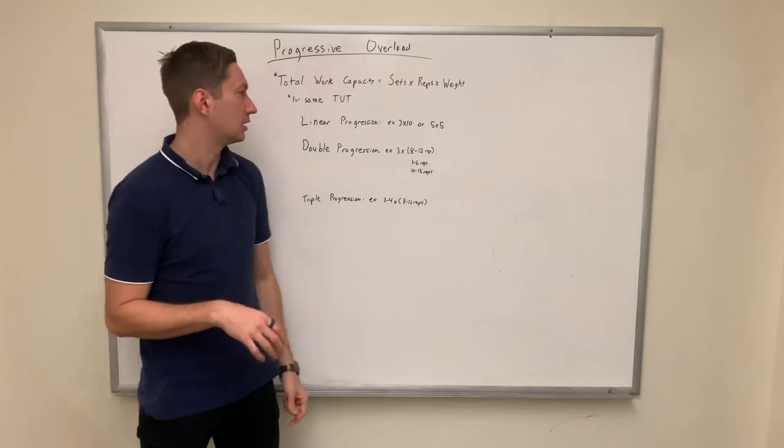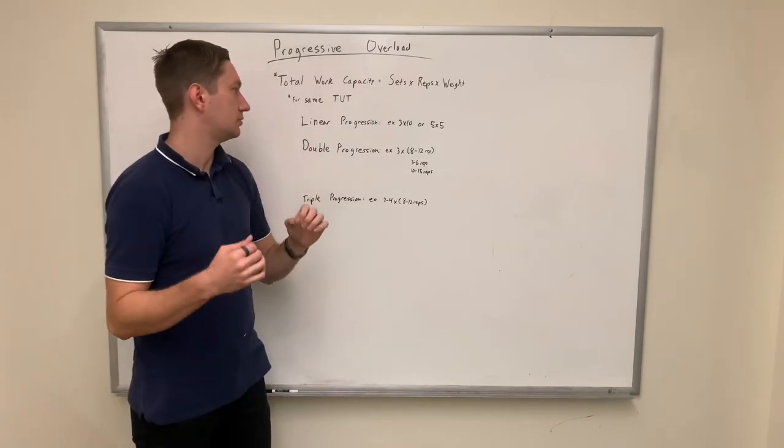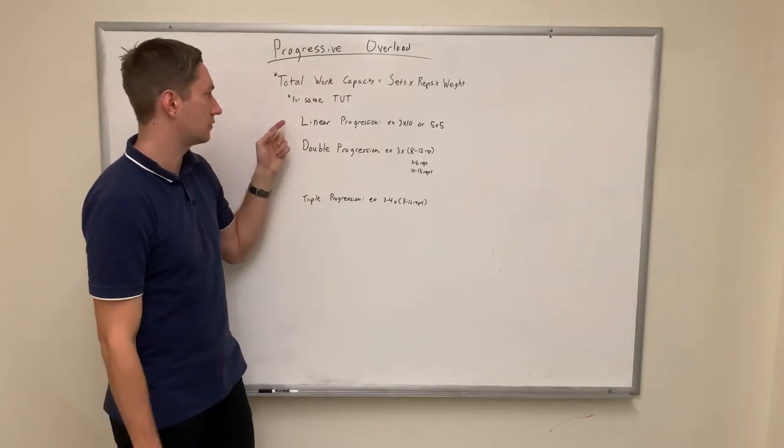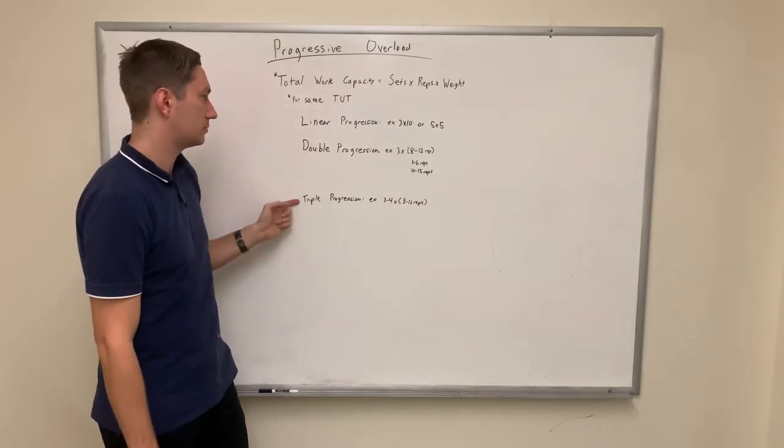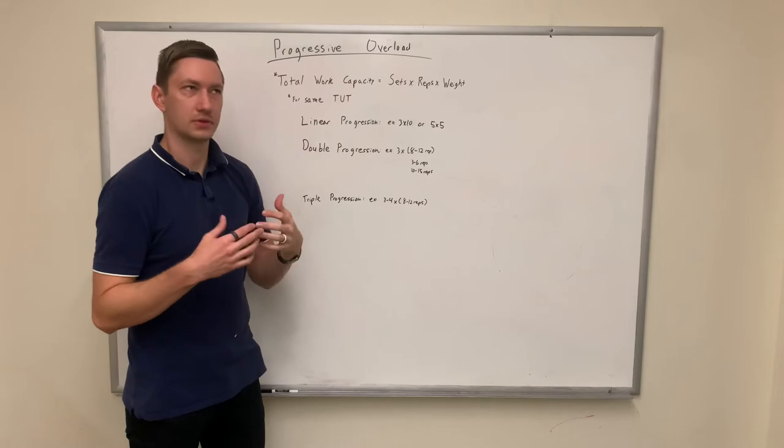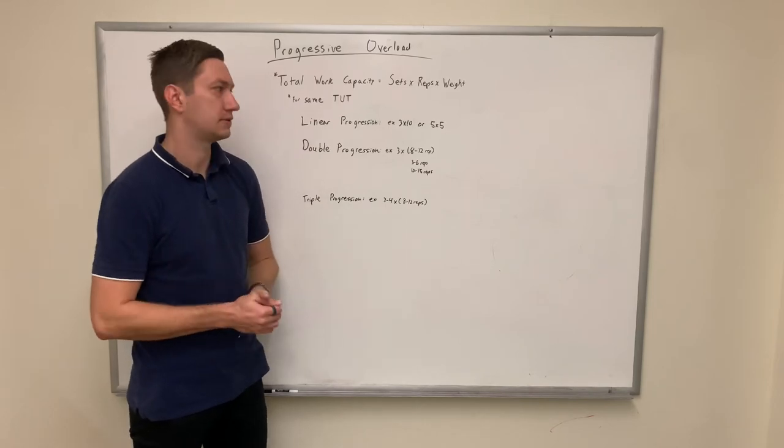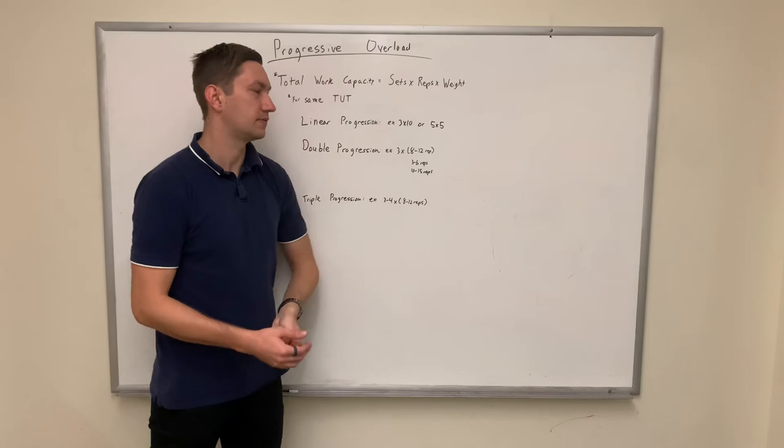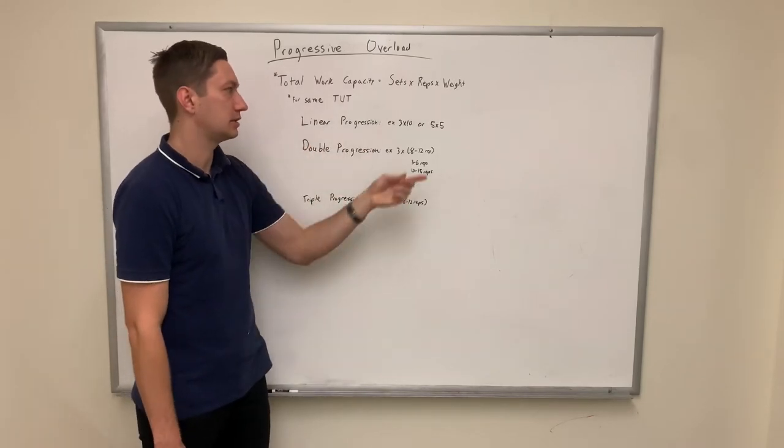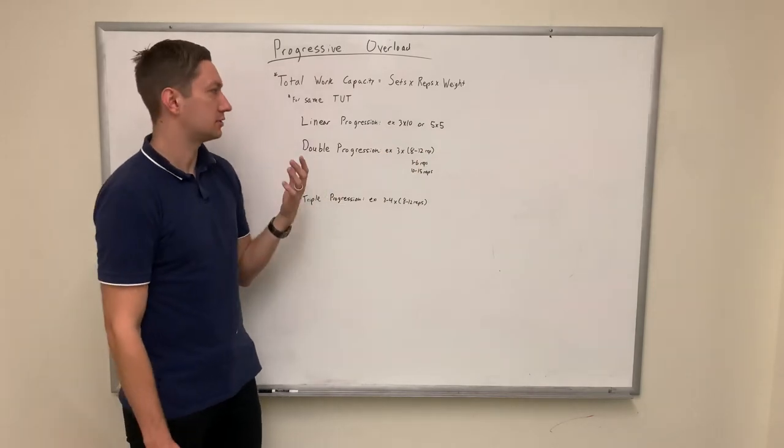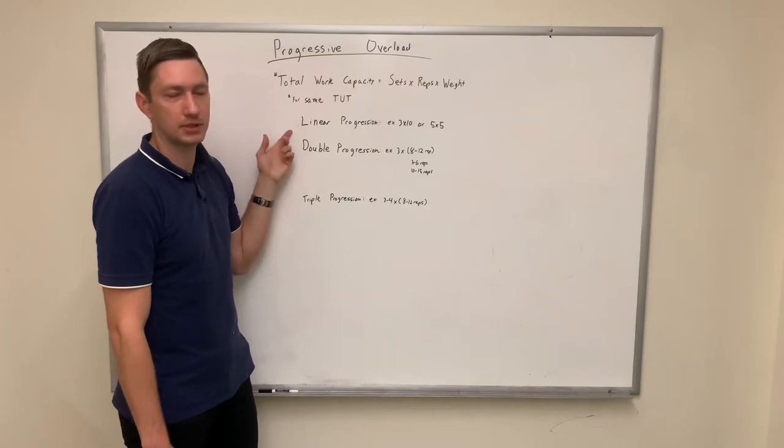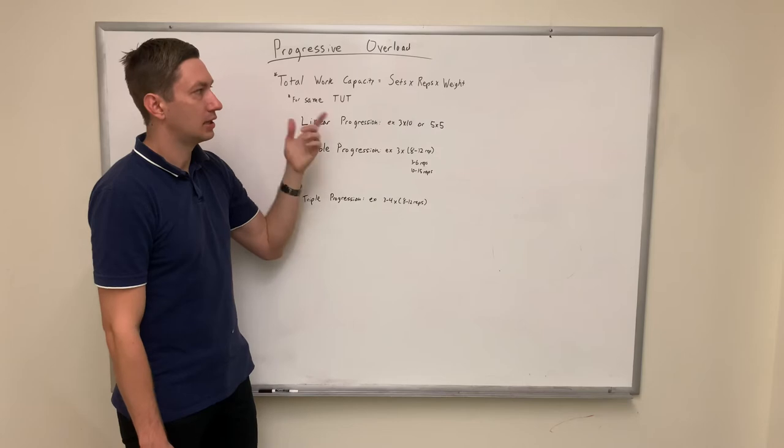Just if you're interested in that. So if you're going to do this, there are several different types of ways to progressively overload. You have linear, double, triple progression. Linear progression is essentially what most people start off with. A lot of beginner programs have things like three sets of ten or five sets of five. In a linear progression, the only thing you're changing is the weight that you're actually trying to lift. And so this is where most people start. As a beginner, it's fine to start here. It makes your programming very easy. All you're having to worry about is the weight.